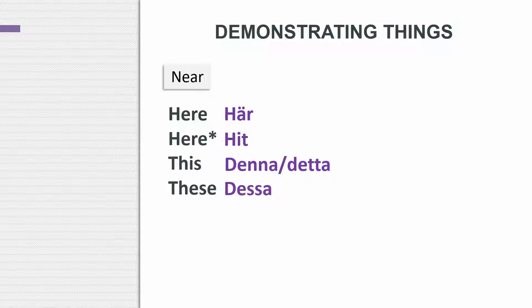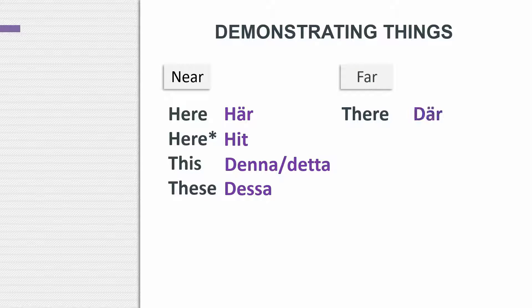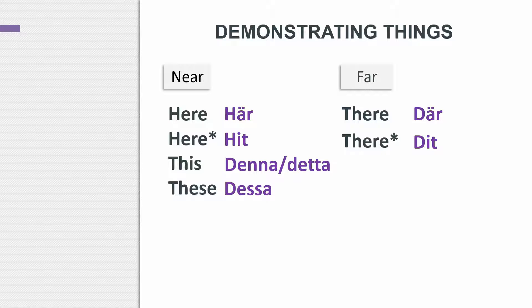In plural, it doesn't matter if it's en or ett — you just use dessa. So what was the word for 'there' in a stationary situation where nothing is moving? That's där. What about 'there' with movement? That's dit. Han är där — he is there. Jag kommer dit — I'm coming there.